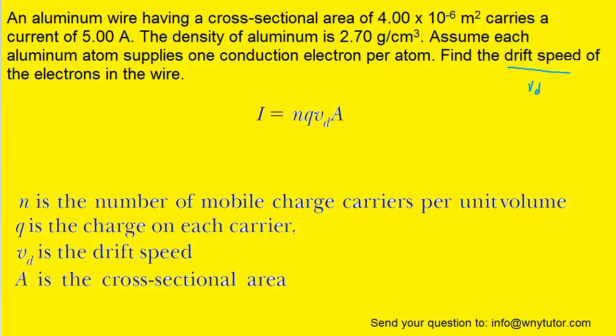Indeed, we probably want to solve for V sub D first, the drift speed, and then we can talk about what all the variables stand for. So we can divide both sides of this equation by NQA. We'll do that on the right side as well as on the left side. On the right side, the NQ and A will cancel, and that's going to leave just the drift speed behind.